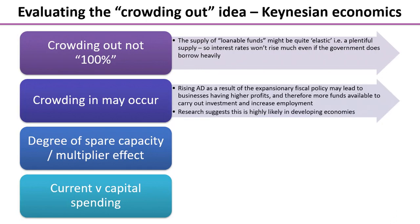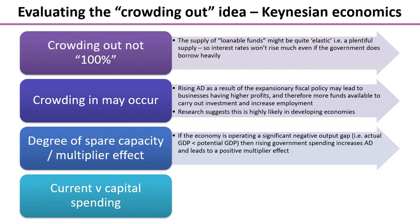We might have crowding in: as aggregate demand rises due to expansionary fiscal policy, businesses could have higher profits, leading to more funds available for private sector investment and increased employment. This links with the multiplier and accelerator effects. Academic research suggests the crowding in effect is actually highly likely, particularly in developing economies. If the economy is initially operating with a significant negative output gap — actual GDP less than potential GDP — then rising government spending increases aggregate demand and can lead to a positive multiplier effect.